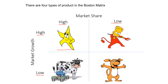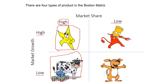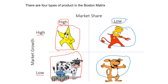Obviously we want stars and cash cows because they both have high market share and are doing well compared to the competition. We don't particularly want dogs or problem children because they have low market share. We also have to consider market growth — a fast-growing market requires effort to establish ourselves, while low-growth markets tend to be more saturated, making cash cows likely to be profitable and dogs less so.